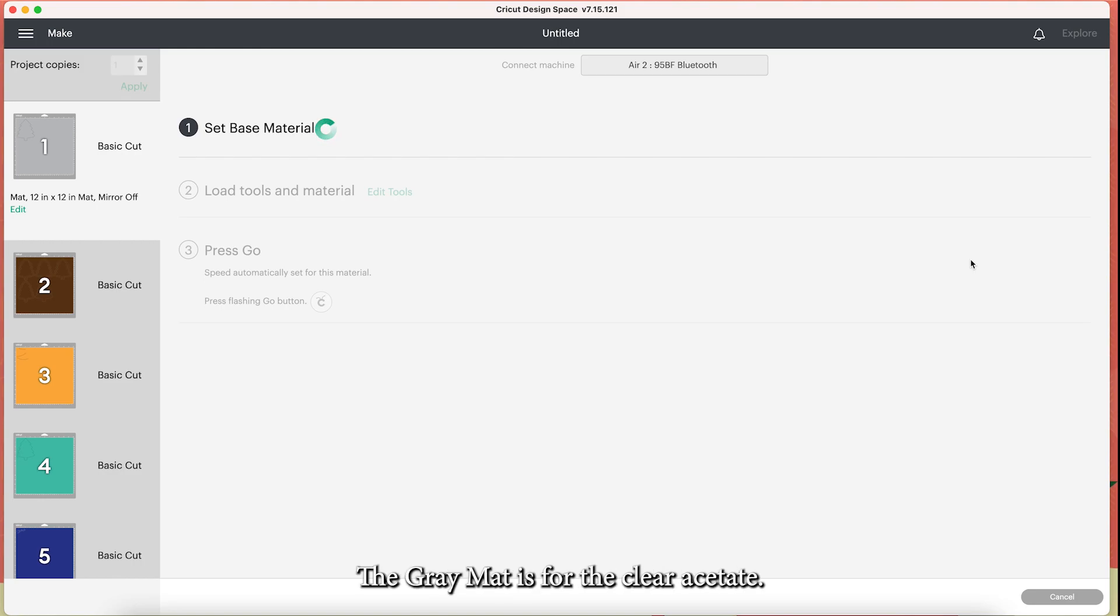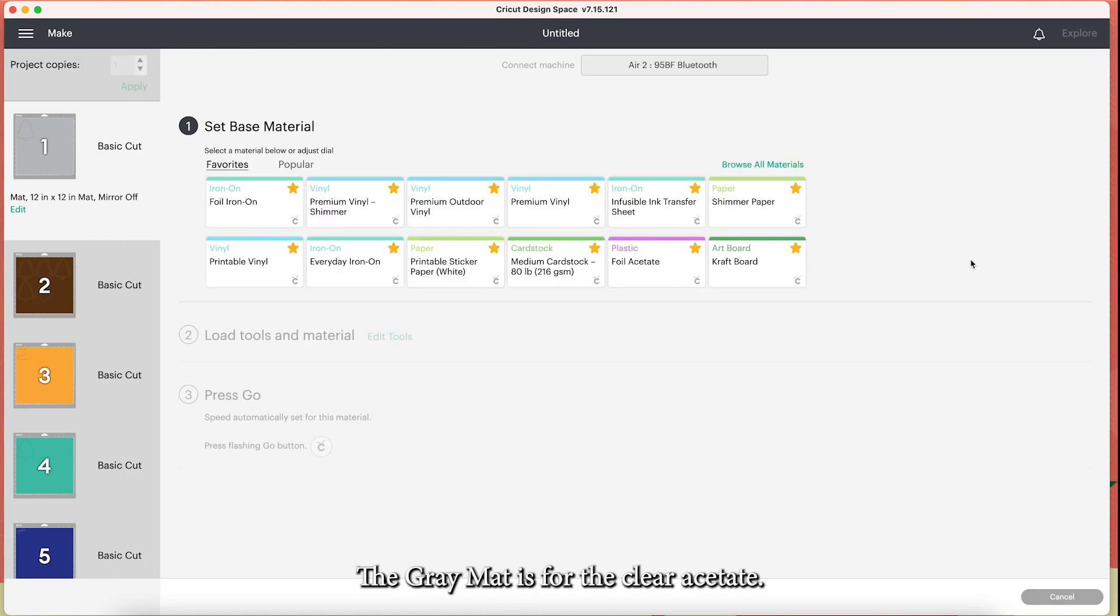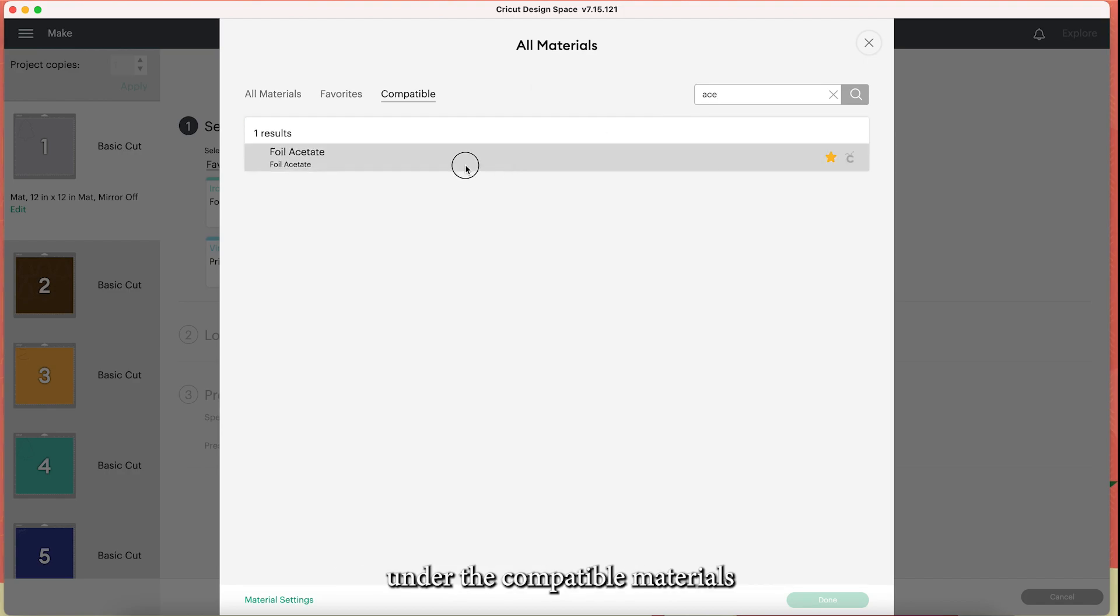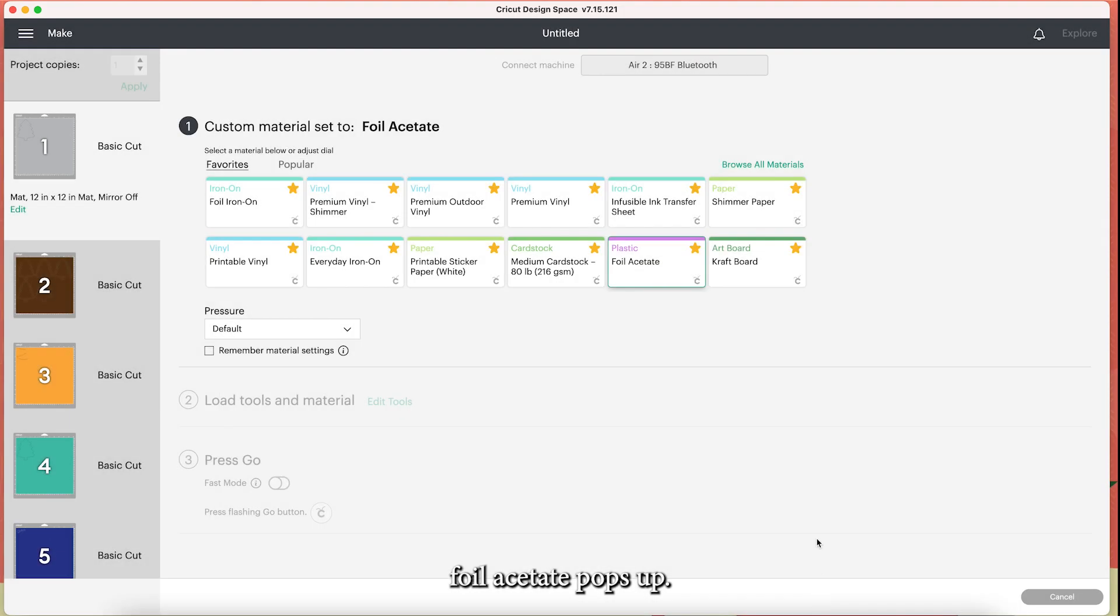The gray mat is for the clear acetate. I have acetate saved to my favorites. But if you click on browse all materials, you'll find foil acetate, which is a Cricut product under plastic. Again, if you don't have that, just click on browse all materials. And then you can start typing in acetate. And right there under the compatible materials, foil acetate pops up.